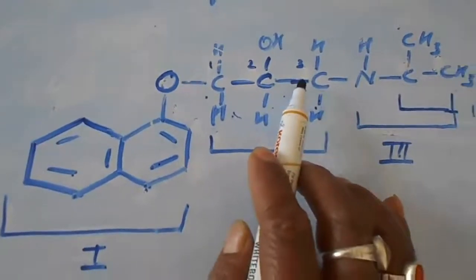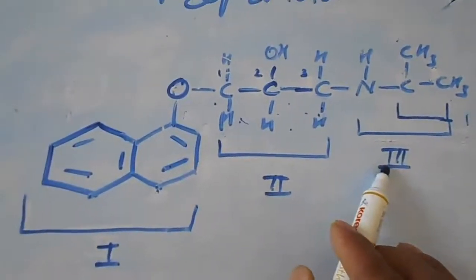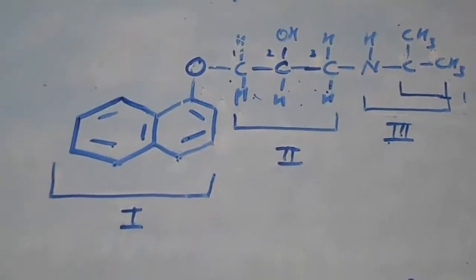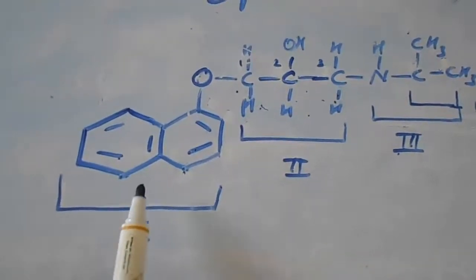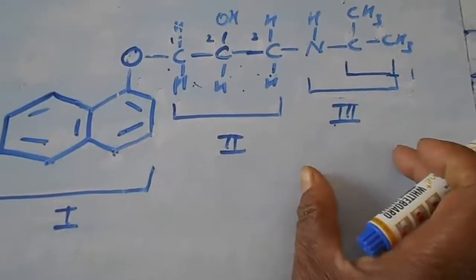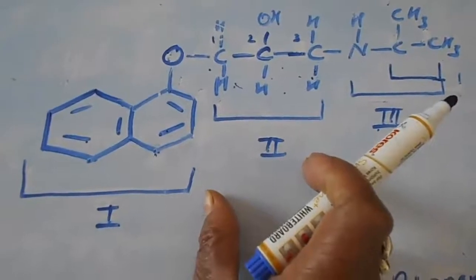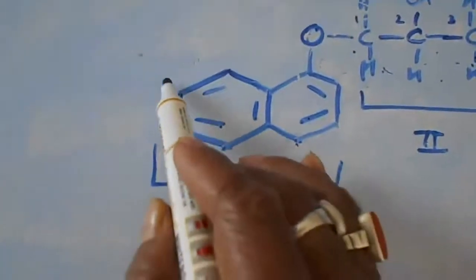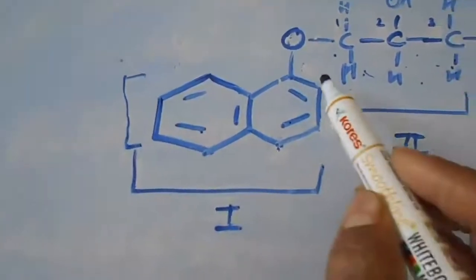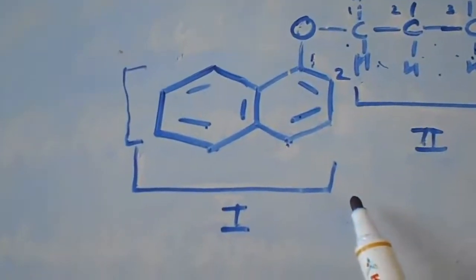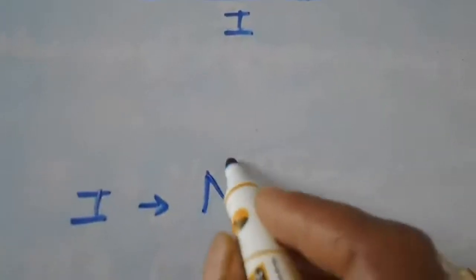This propan-2-ol is further substituted at the first position and the third position with the first and third marked substituents respectively. Let's look individually at what is the IUPAC nomenclature of the first segment and the third segment. When I look into the first segment, I can see that a naphthalene ring is present, which is further attached with an oxygen at the first position of the naphthalene.